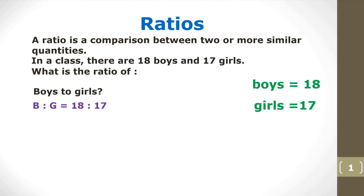What is the ratio of girls to boys? Girls are 17, boys 18, so therefore the ratio is 17 to 18.